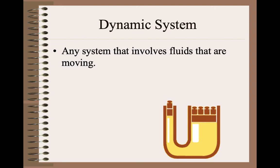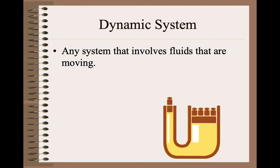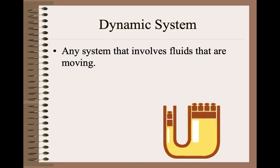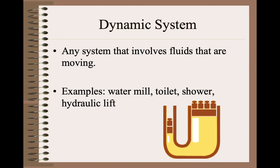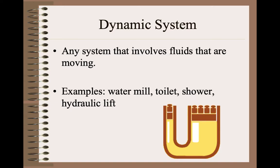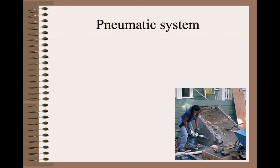Dynamic simply means there's stuff moving, and really the heading should be fluid dynamic systems. We're talking about fluids that are moving in order to do work, in order to accomplish a task for us. And there are some very common examples. The first one we're going to talk about is a pneumatic system.